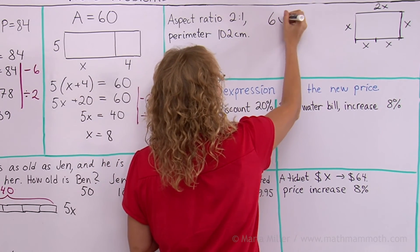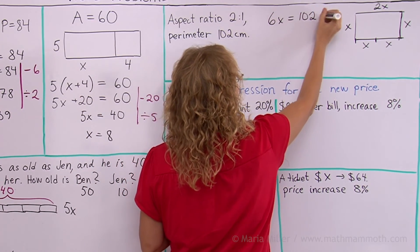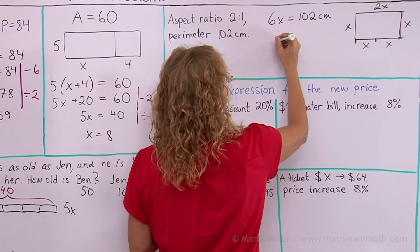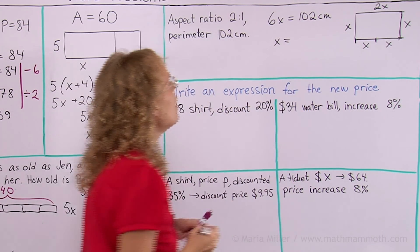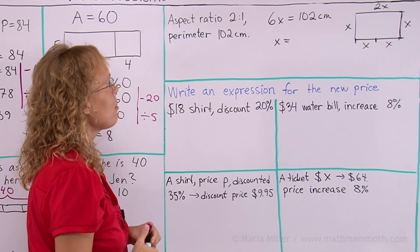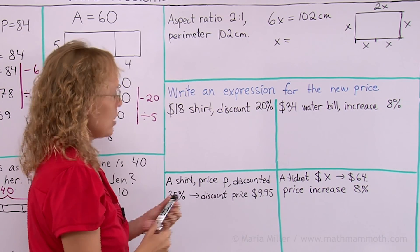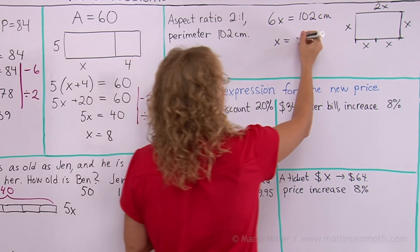So all the way around is 6x equals 102 cm. And then, from there, x would equal 102 divided by 6, which is 17 cm.